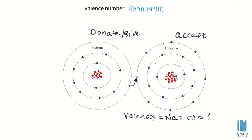The number of electrons that an atom donates or accepts is the valence number. So the valence of sodium is one, and the valence of chlorine is one. This is the valence number. In the periodic table, elements are organized by their valence electrons.